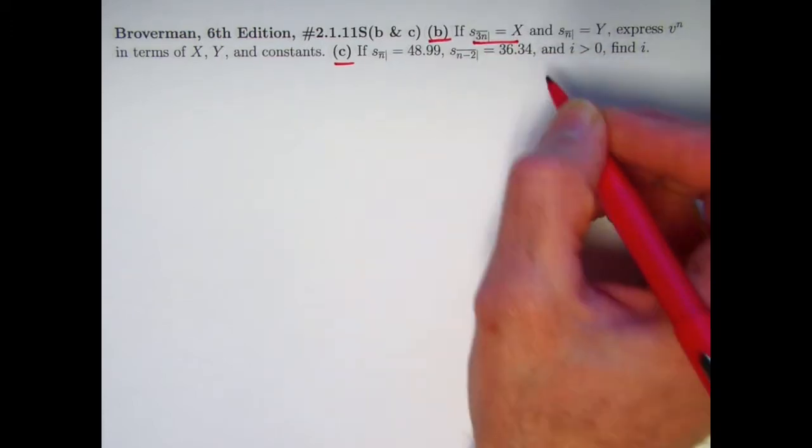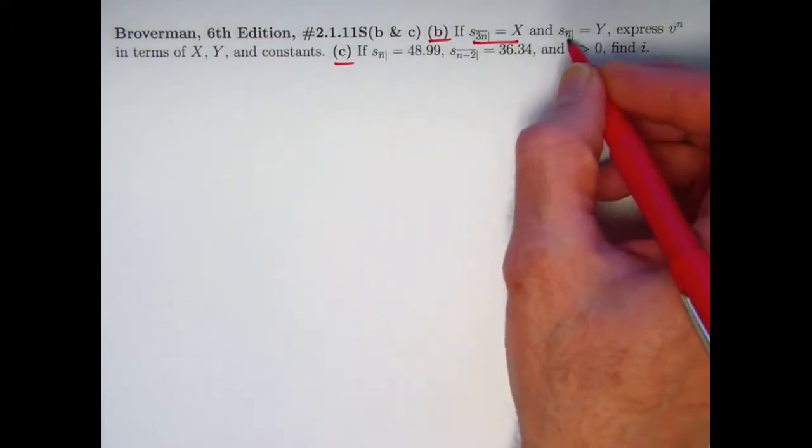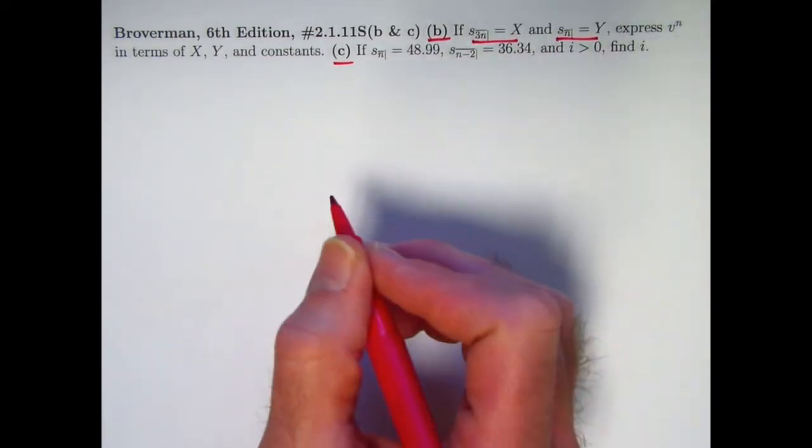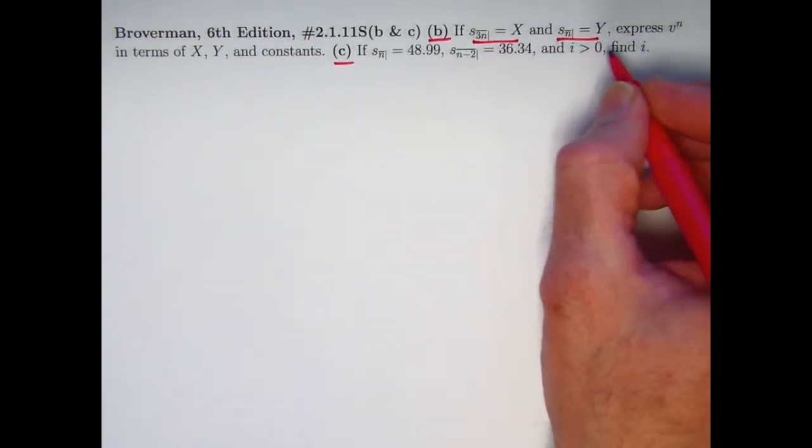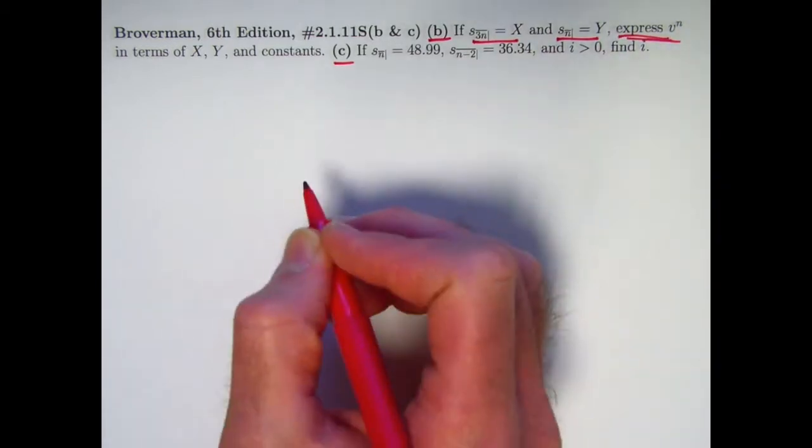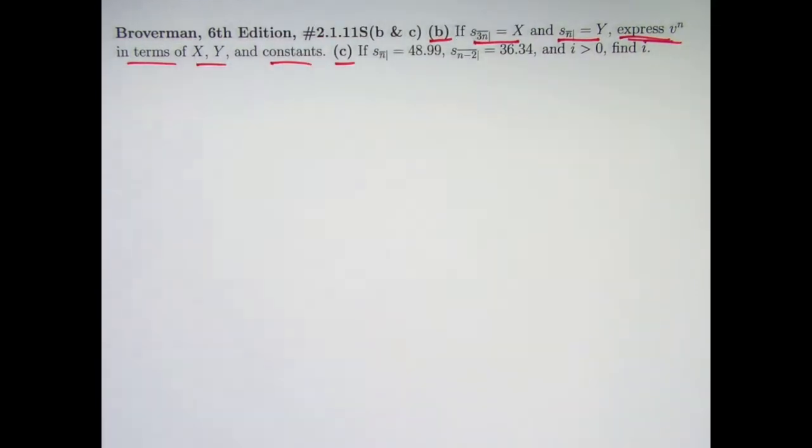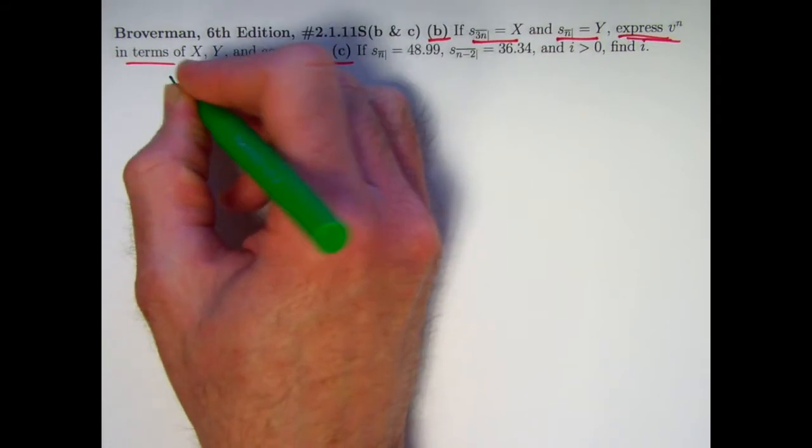If you don't recall what that symbol means, you'll want to watch the last few videos where I go into a little bit more depth. I'm going to set X equal to S3n, Y equal to Sn, and the goal here is to express V to the n in terms of X, Y, and constants. I'm going to solve this two ways to emphasize flexibility in solving things. Different ways might be quicker or easier.